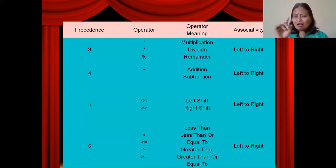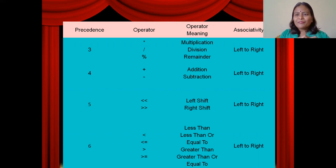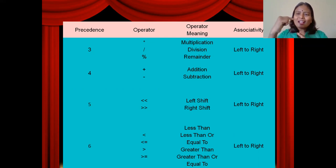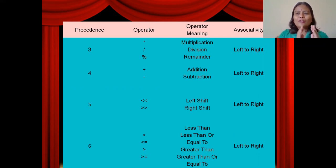The next precedence level — third — goes to star (multiplication), division, and percentage (remainder). If these three symbols appear together, then all are having equal precedence three, and associativity left to right is the order of evaluation. The next lower precedence goes to plus and minus. If star and plus are mixed in an expression, no need to worry about associativity — star has the highest precedence, so wherever star is placed, its left and right operands are operated first. Once star is completed, it moves to the plus operation.